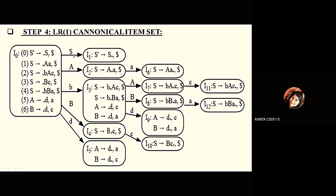With respect to variable S, we have shifted the dot. When the dot is at the rightmost position, we consider it a reduction. For variable A also, the dot is shifted accordingly. When the dot is before a terminal, we don't expand further. In canonical set I3, because of terminal B, we shift for B in both cases. When the dot comes before a variable again, we expand further, writing those productions. In this way the entire canonical item set is created.